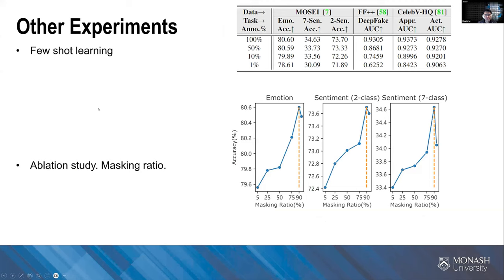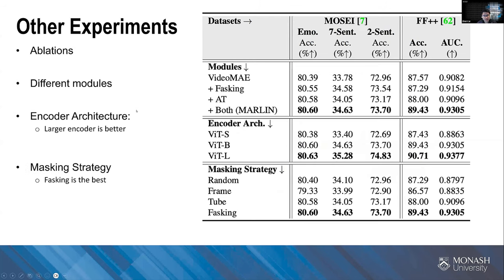MARLIN is also suitable for few-shot learning. With only 10% or even 1% of training data, the results don't drop too much. For choosing the best architecture, we ran ablation studies — from experiments, a 90% masking ratio is the best, consistent with previous works. We also study different module contributions, encoder architectures, and masking strategies, but due to time limits I'll skip those details — you can check the paper.